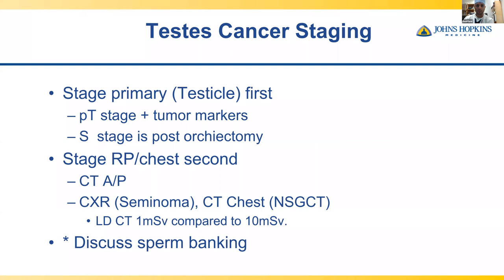In testis cancer staging, we always want to stage the testicle first — perform the radical orchiectomy, get the final pathology staging, and obtain tumor markers. Preoperative tumor markers give a rough sense of histology. The S stage — the post-orchiectomy serum marker stage — is the key staging element. In the meantime, we routinely get CT abdomen and pelvis. For seminomas you can get a chest X-ray, but for non-seminomatous germ cell tumors we usually get a CT chest.